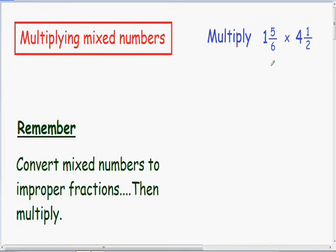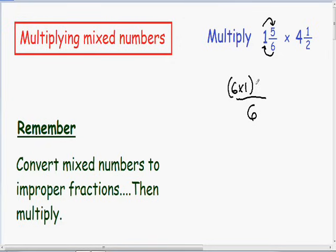Let's convert these mixed numbers into improper fractions. We'll start off with 1 and 5/6. Let's convert this into an improper fraction. Since 1 and 5/6 has a 6 in the denominator, we know that our improper fraction is also going to have a 6 in our denominator. And in our numerator, the first thing we do is we multiply our 6 by the whole number of 1, and then we add all that to the numerator of 5.